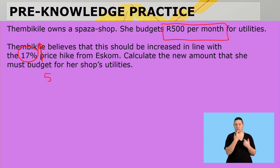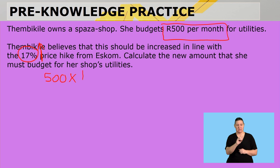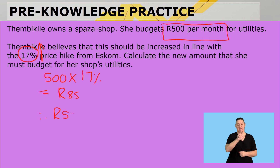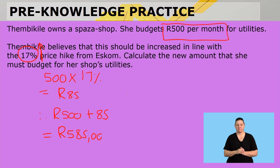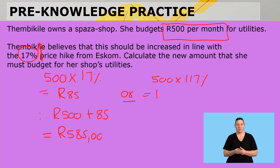She currently has a budget of 500 Rand and needs to increase it by 17%. First, we calculate the price increase: 500 × 17% = 85 Rand. Her new amount will then be 500 + 85 = 585 Rand. Remember there is a shorter way: 500 × 117% = 585 Rand. Those are the two ways you can attempt the question.